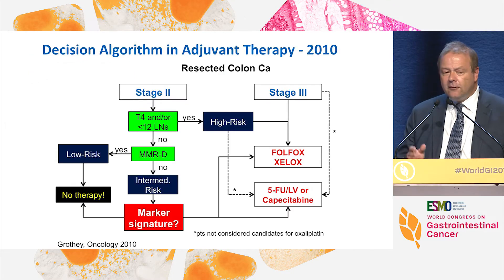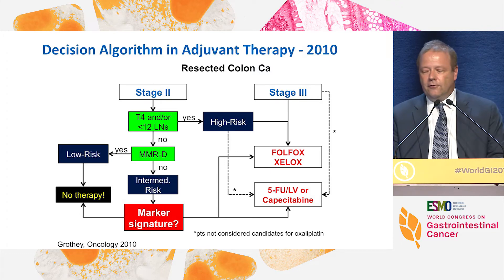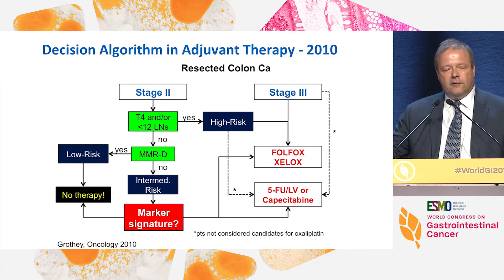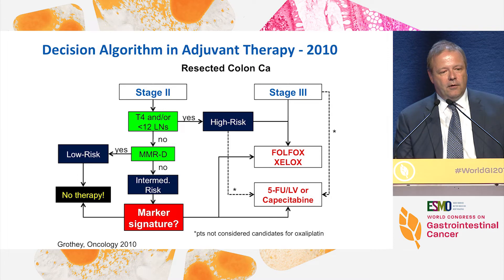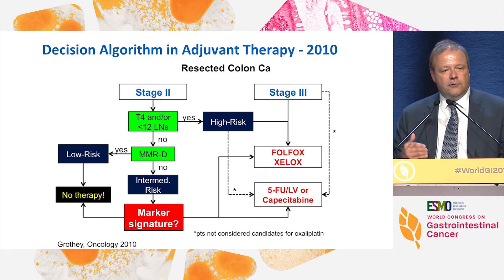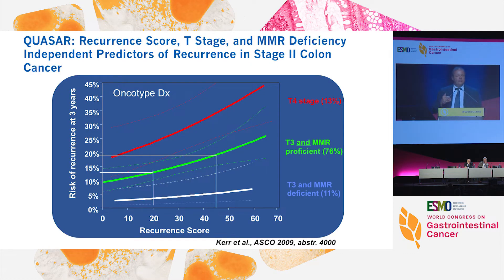MSI-high had a hazard ratio of 0.28, meaning a 72 percent risk reduction compared to MSS — highly statistically significant. Unfortunately, mismatch repair deficiency only accounts for about 10 to 15 percent of patients. In 2010, my algorithm was: for resected stage three colon cancer, the default was FOLFOX or CAPOX, with some elderly patients potentially not needing oxaliplatin. For stage two, I looked at high-risk factors — T4 or fewer than 12 lymph nodes — and mismatch repair deficiency to identify low-risk patients who should not be treated.